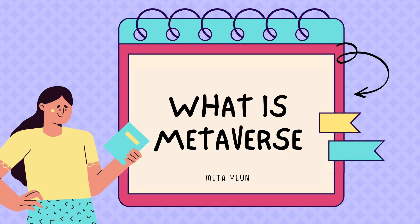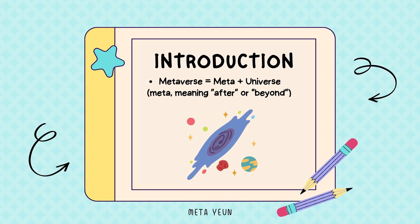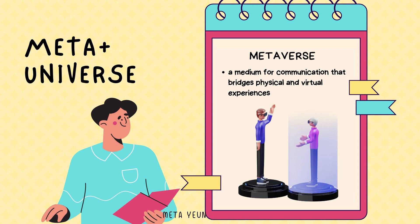First, what is Metaverse? Metaverse has several different types of meaning. First, Metaverse is composed of the words Meta and Universe. Meta meaning after or beyond. And if you connect that with Universe, it means beyond the Universe — so it's beyond your imagination.